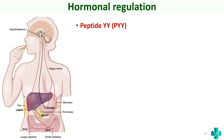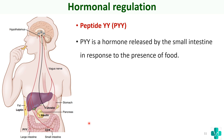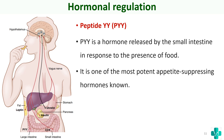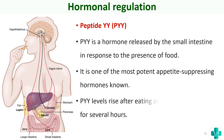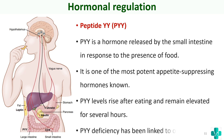Peptide YY (PYY) is produced by the intestines in response to the presence of food and is one of the most potent appetite-suppressing hormones known. Its level rises after eating and remains elevated for several hours — which is why we don't feel hungry for several hours after a meal. Deficiency of PYY is linked to obesity.